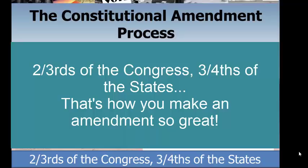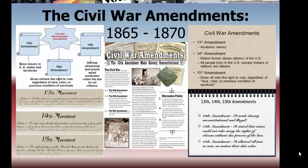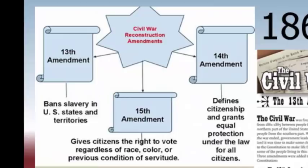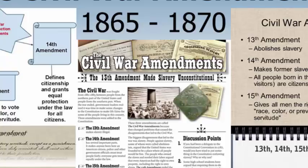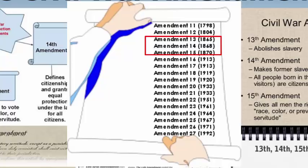The first three amendments you need to know are what we call the Civil War amendments. All three were passed within five years of the end of the Civil War, from 1865 to 1870, in response to the slavery question. It's really kind of a big deal that three were passed in succession within five years. Let's start with the 13th amendment, which abolished slavery.